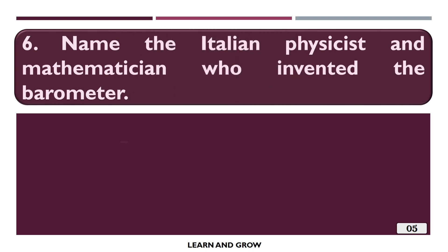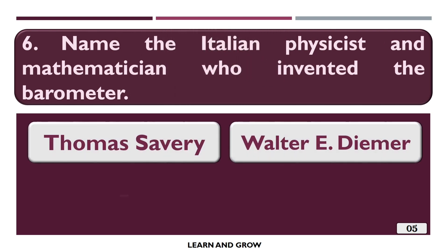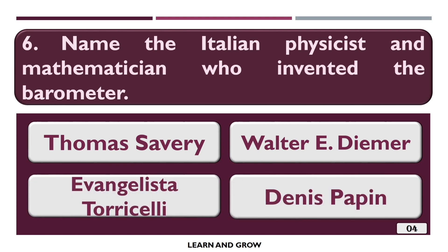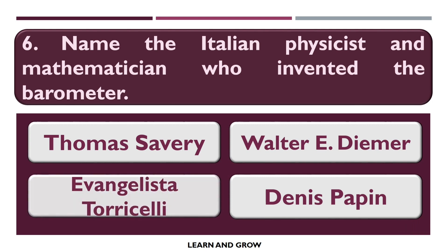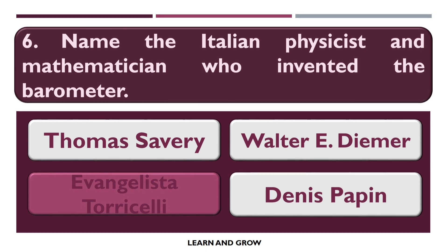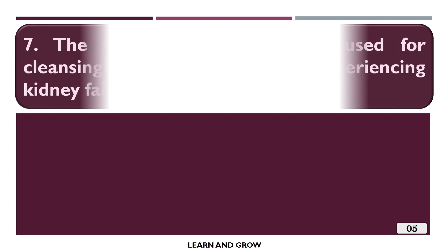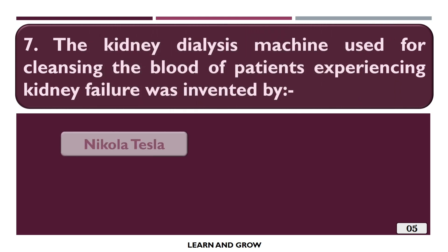Name the Italian physicist and mathematician who invented the barometer. The correct answer is Evangelista Torricelli. The kidney dialysis machine, used for cleansing the blood of patients experiencing kidney failure, was invented by the...